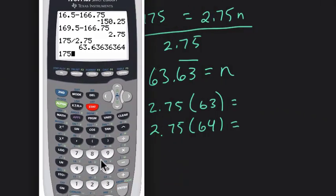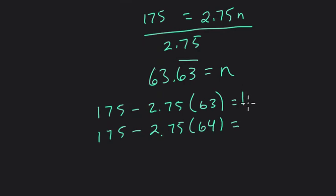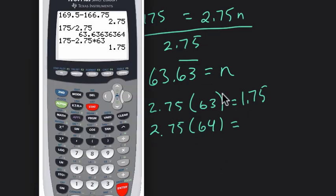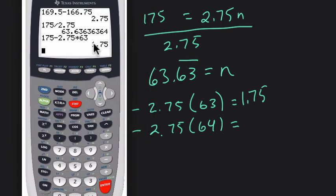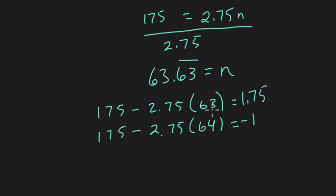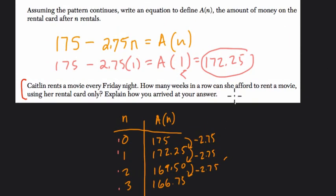In these two cases, $175 minus $2.75 times $63, we get $1.75 left on the card. So here, $175 minus $2.75 times $63, we show $1.75 left on the card. But unfortunately, every movie costs $2.75. So if we go another week, $2.75 times $64, she has a negative balance, negative $1. So that means she can go for 63 weeks. But on the 64th week, it's going to cost her some money. So the answer is, at 63 weeks in a row. She can go 63 weeks in a row before she has to start paying for these movies right here.